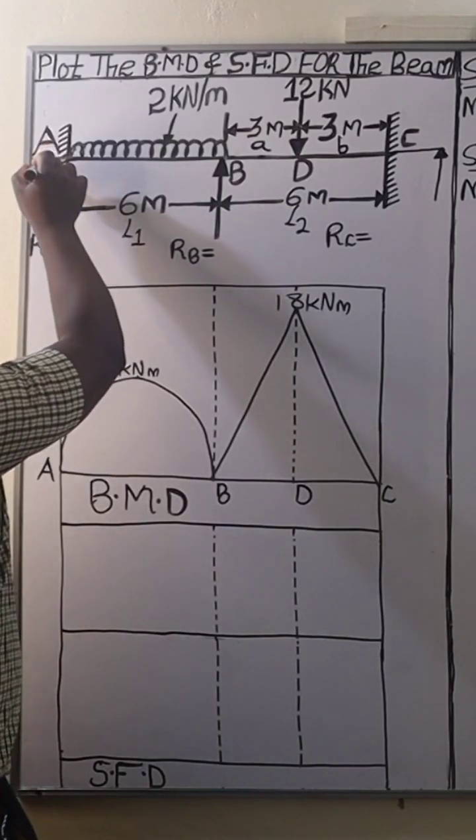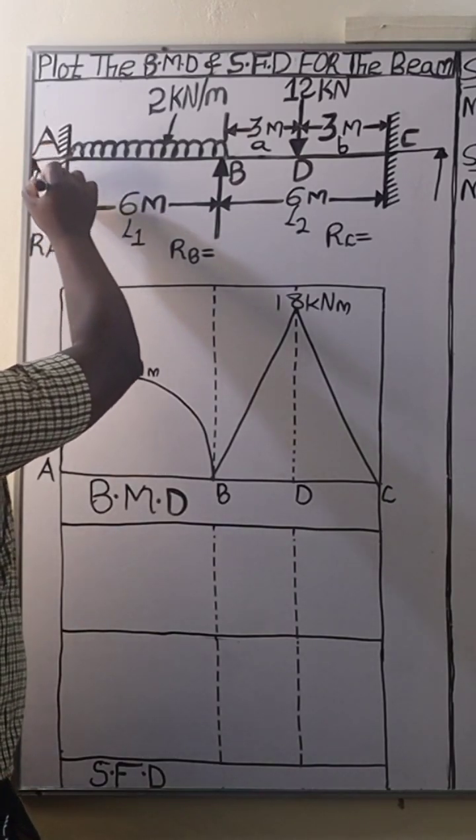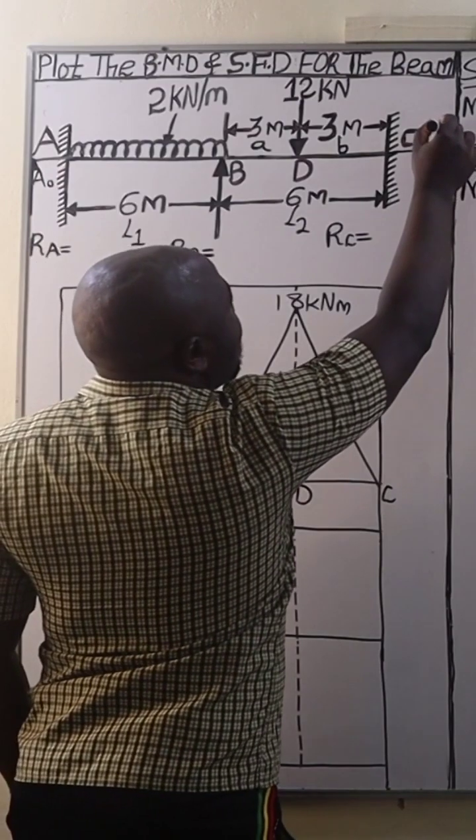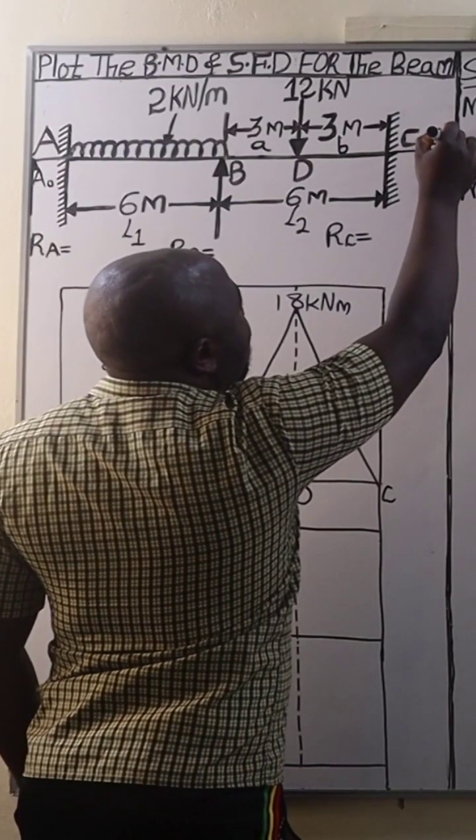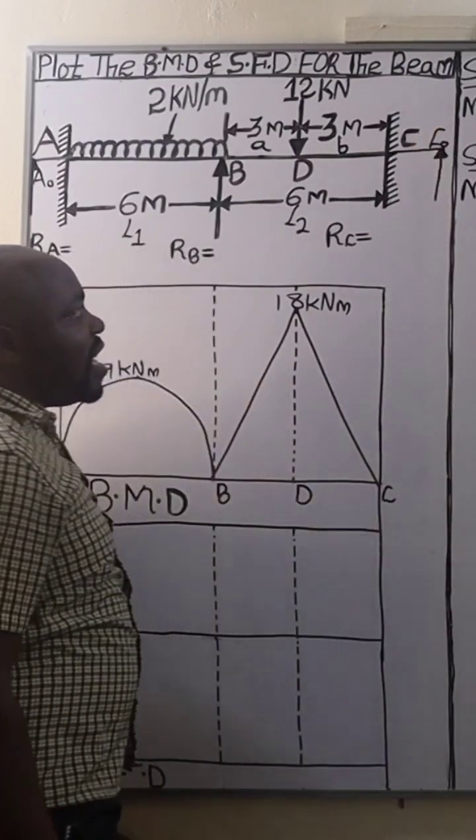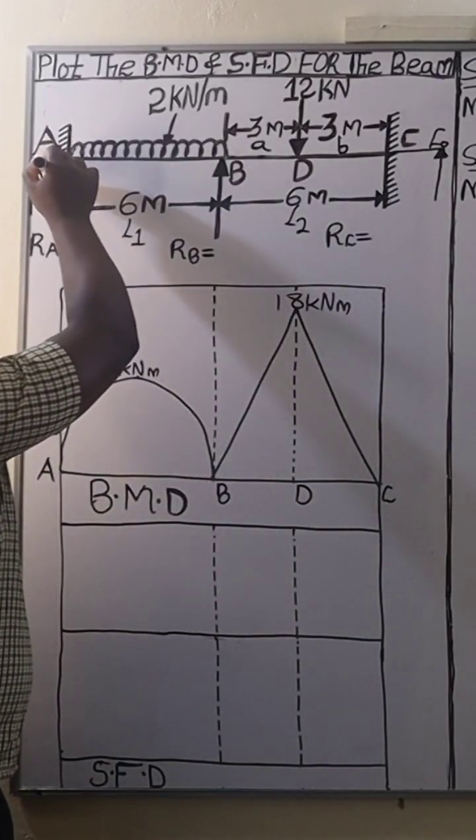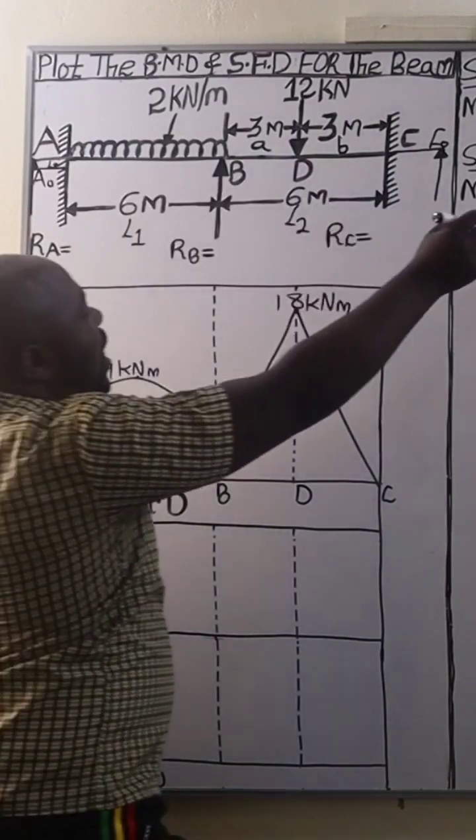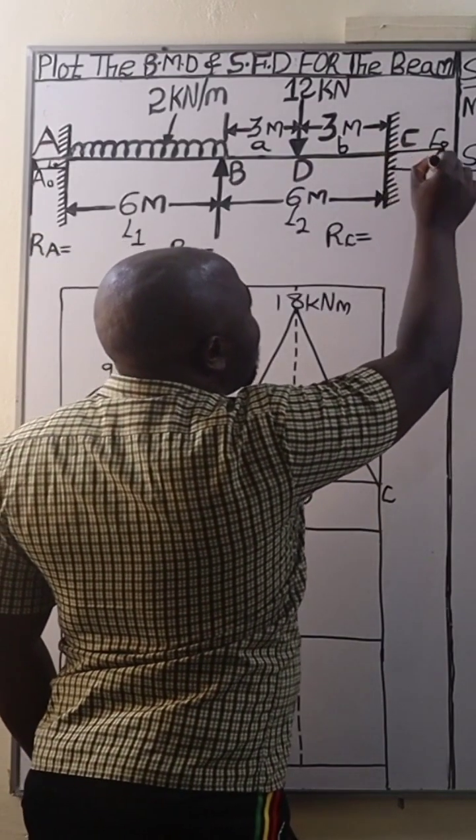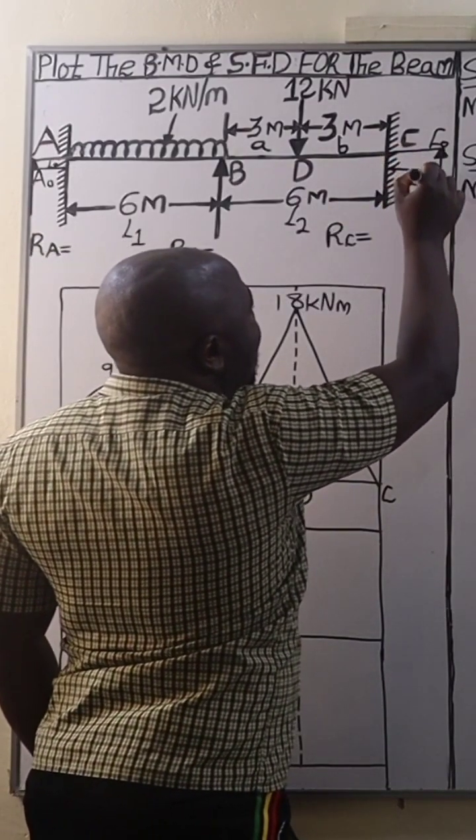However, this point is going to be A0, whereas this point beyond C is going to be C0. The span A to A0 is going to be L0, and the span C to C0 is going to be L0.